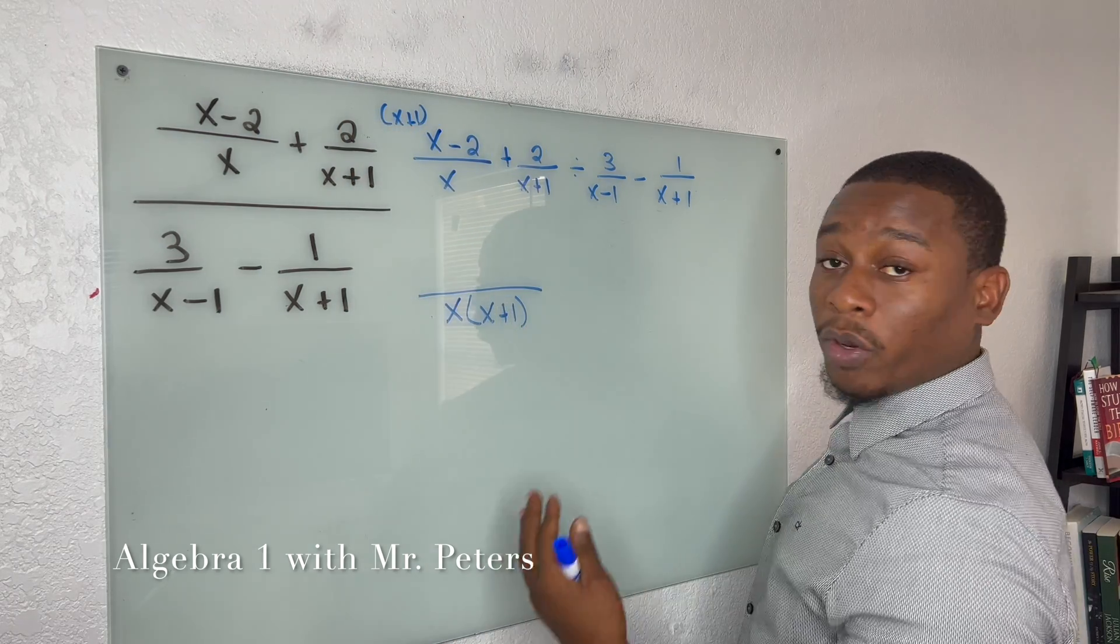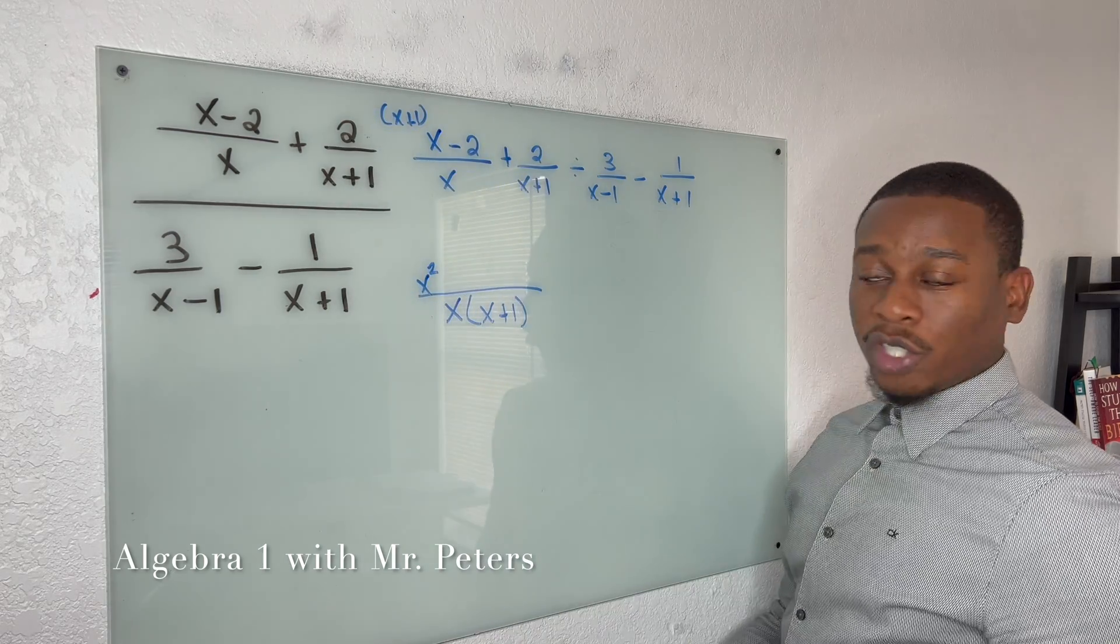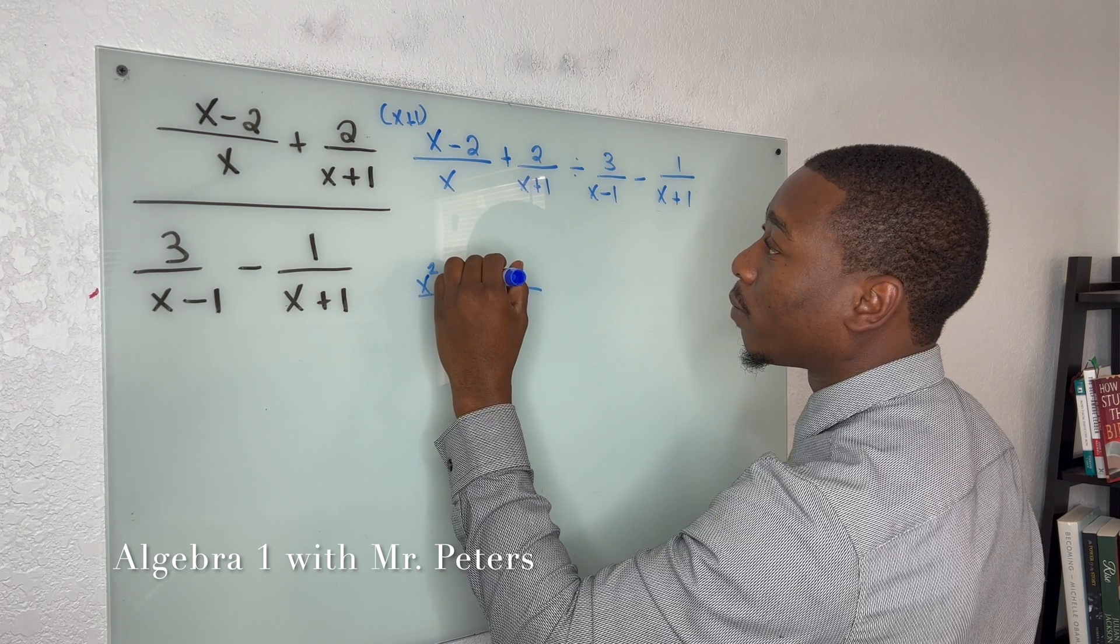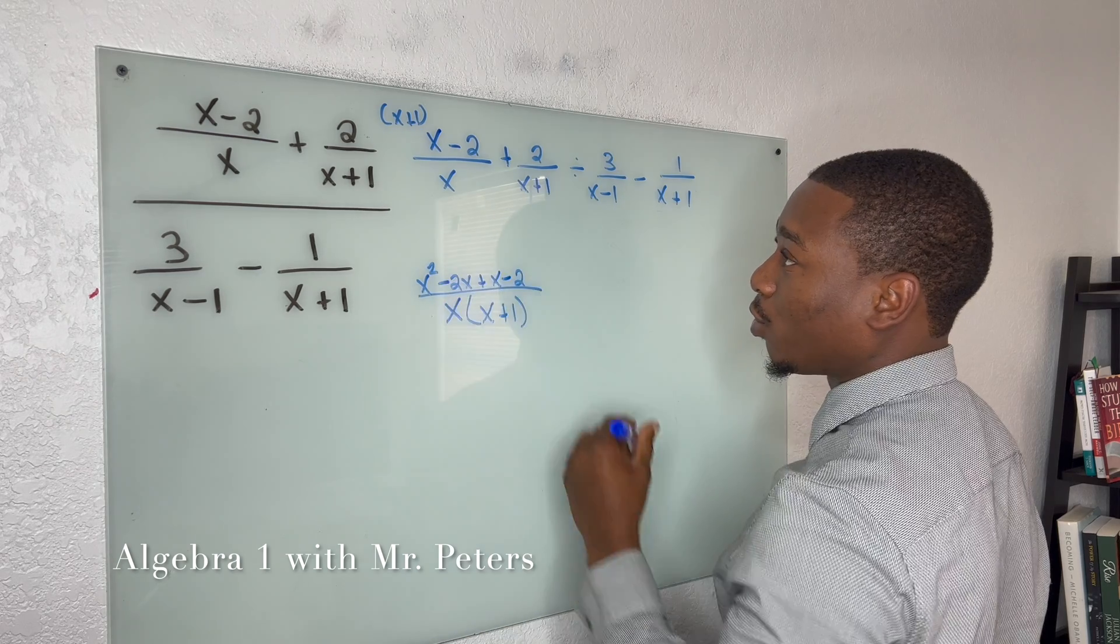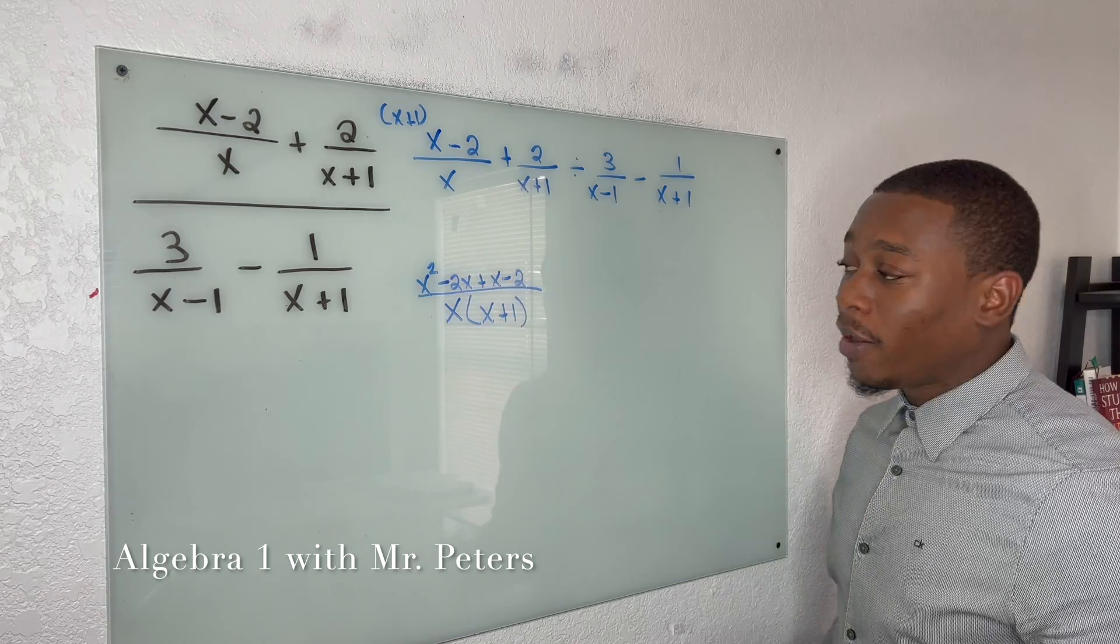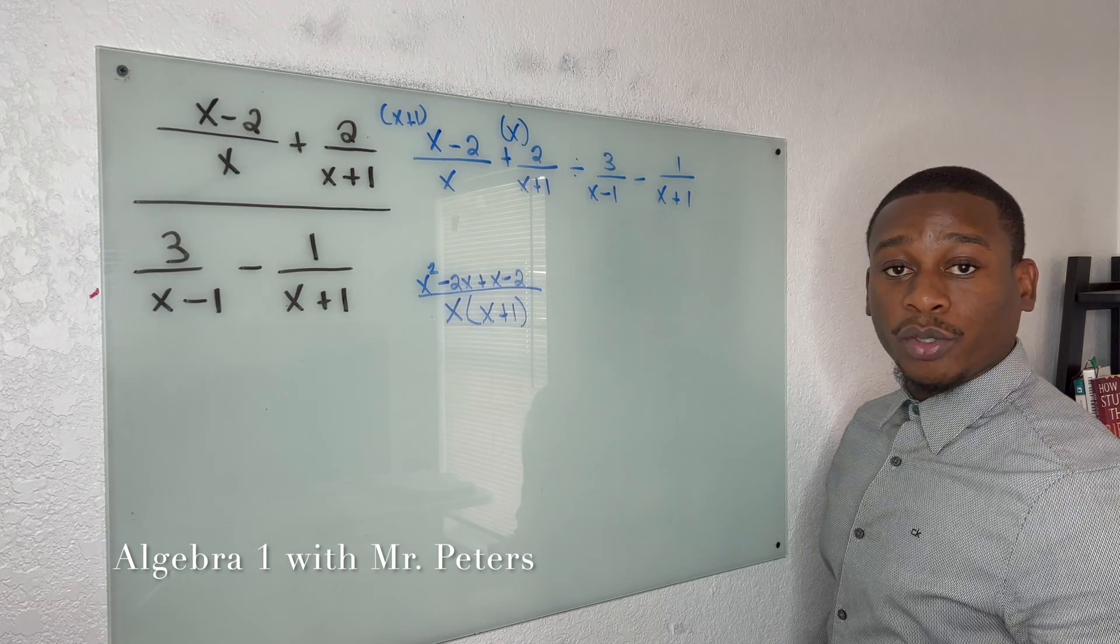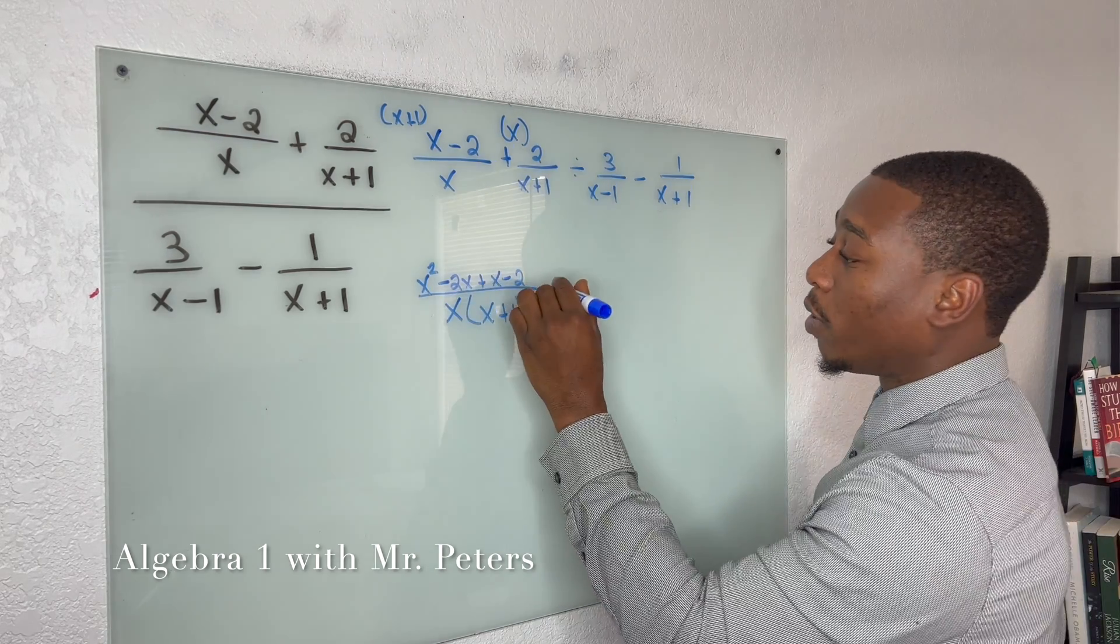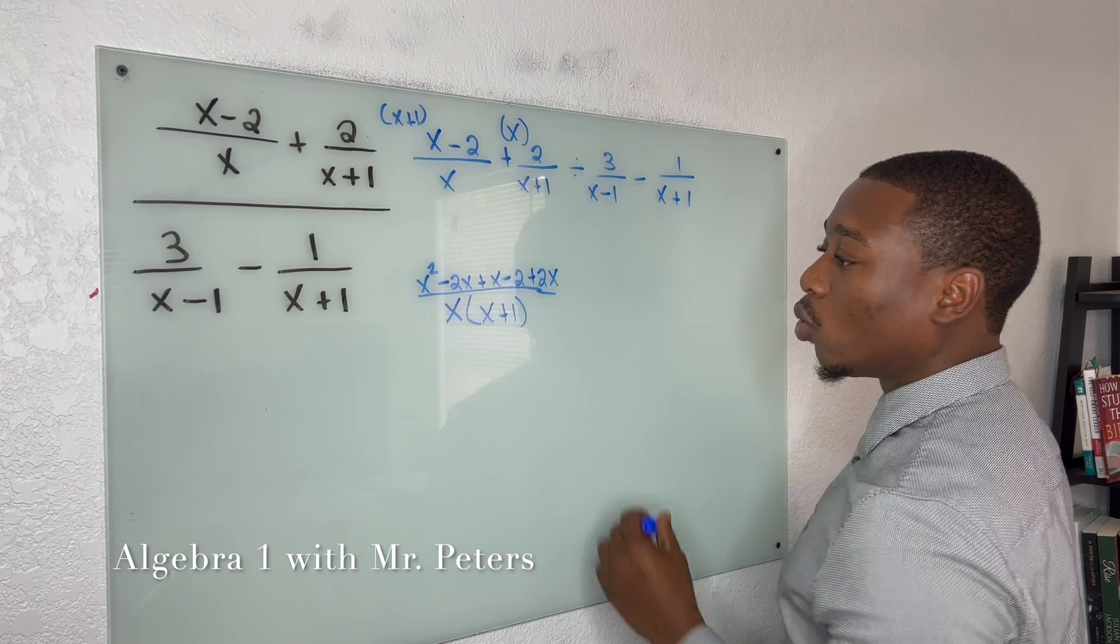So once we do that, we FOIL. So x times x gives me x squared and then we're going to continue distributing. So we'll have minus 2x plus x minus 2. And then now what we're going to do, we're going to take x and multiply it by 2 so that we'll have the same common denominator. And once we do, we're going to have positive 2x at the end.